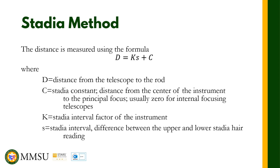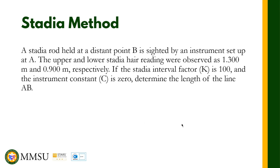To illustrate this formula, let us answer this problem. A stadia rod held at distance point B is sighted by an instrument set up at point A. The upper and lower stadia hair readings were observed as 1.3 meters and 0.9 meters respectively. The stadia interval factor K is 100 and the instrument constant C is 0. Determine the length of the line.